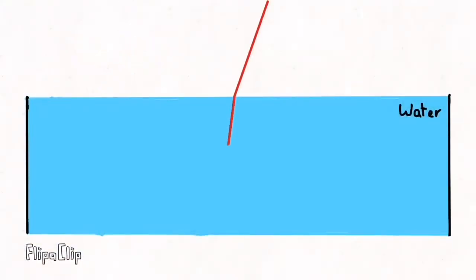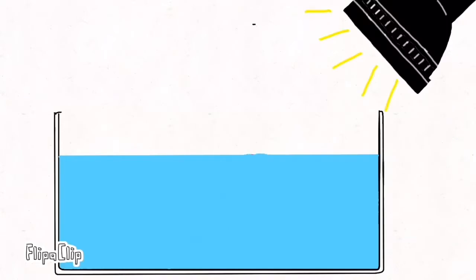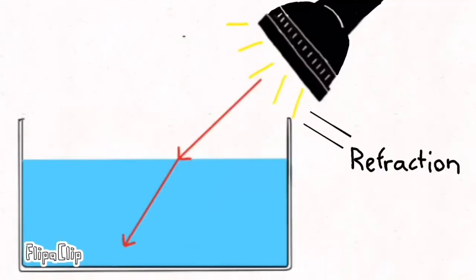This is because of refraction. Water bends light and slows the beam because of the density. This causes light to bend slightly. This is called refraction.